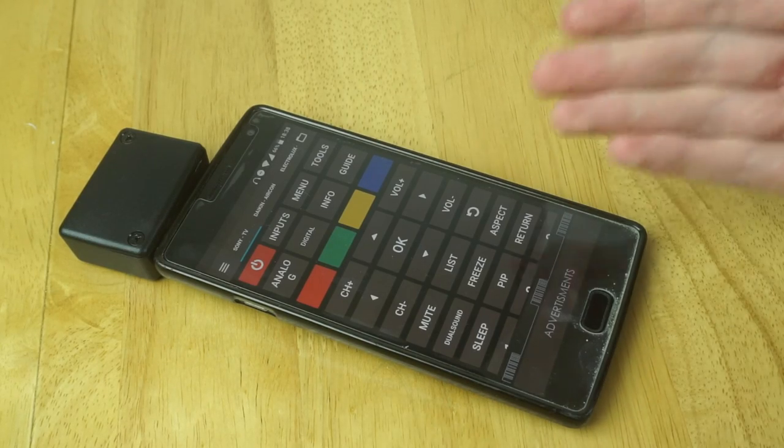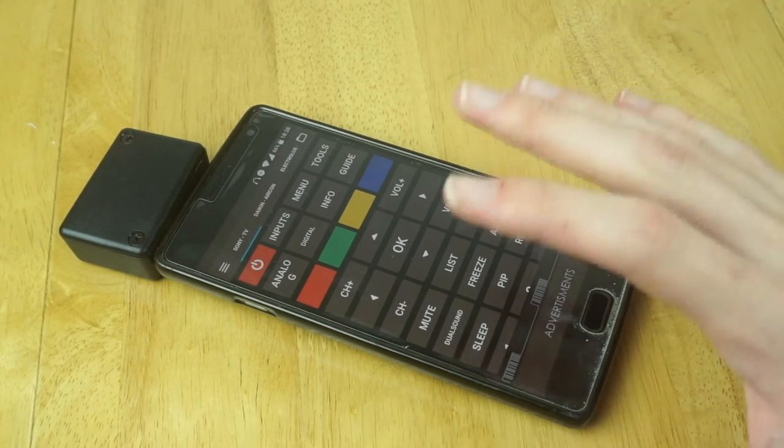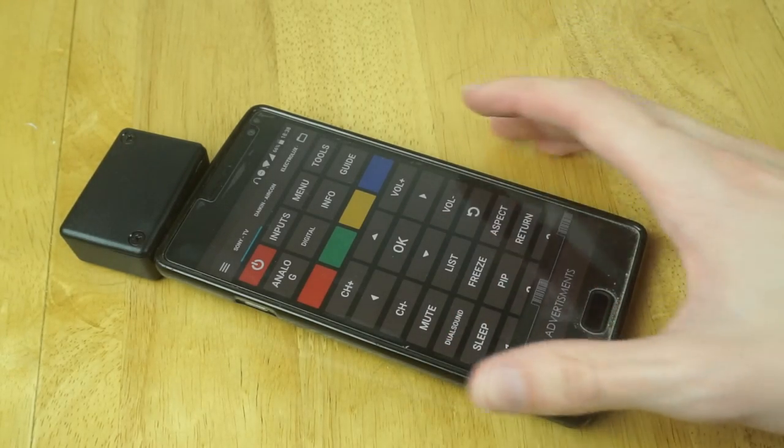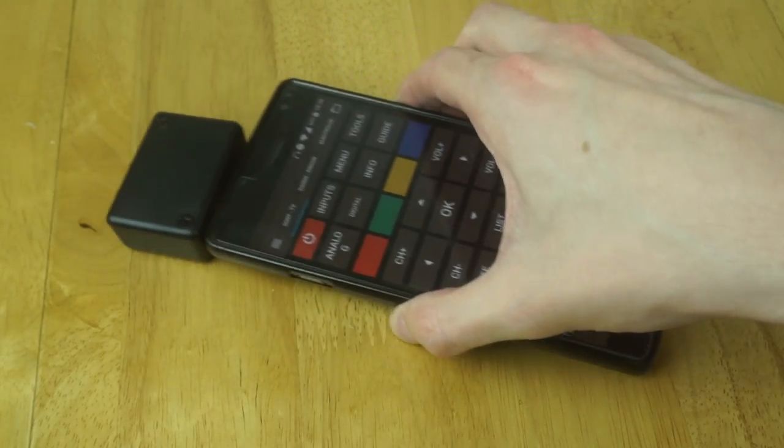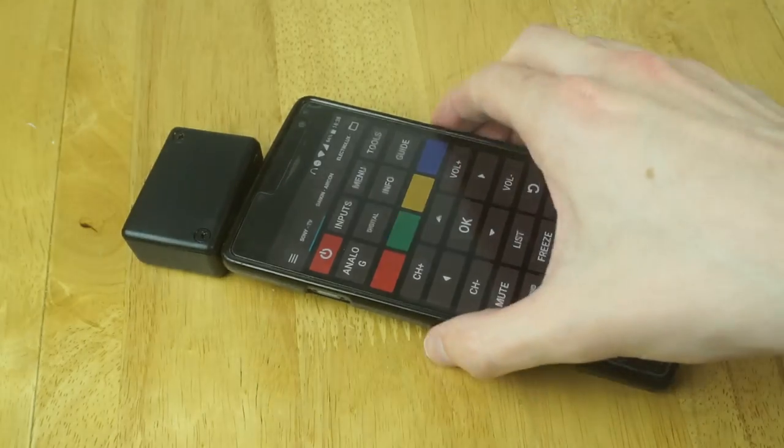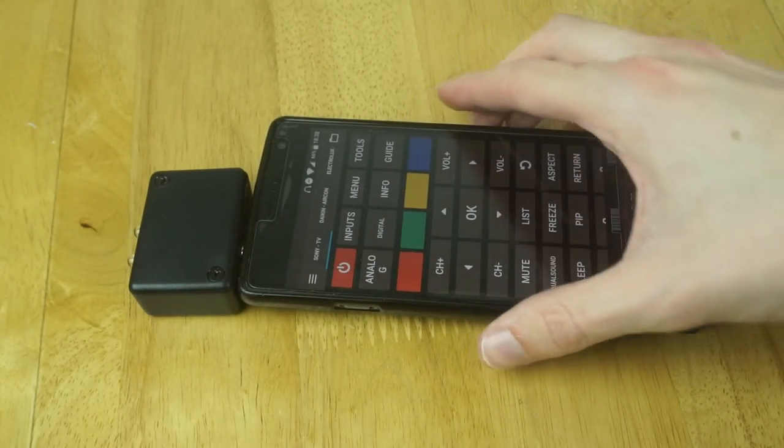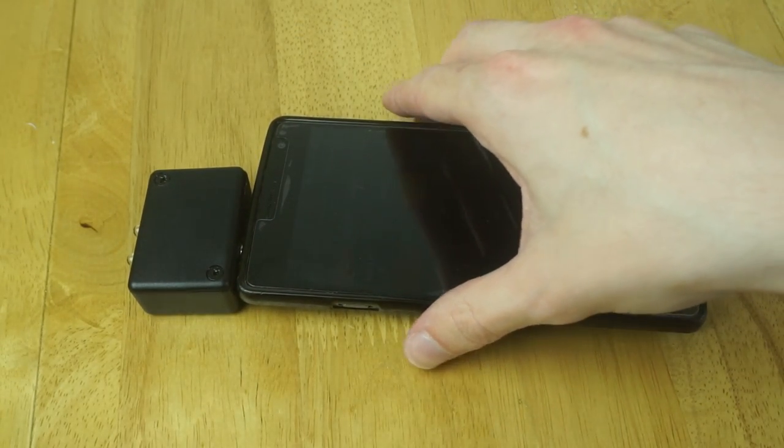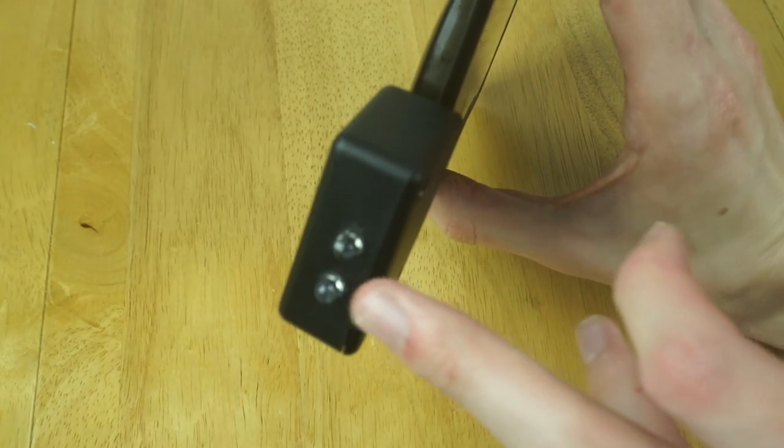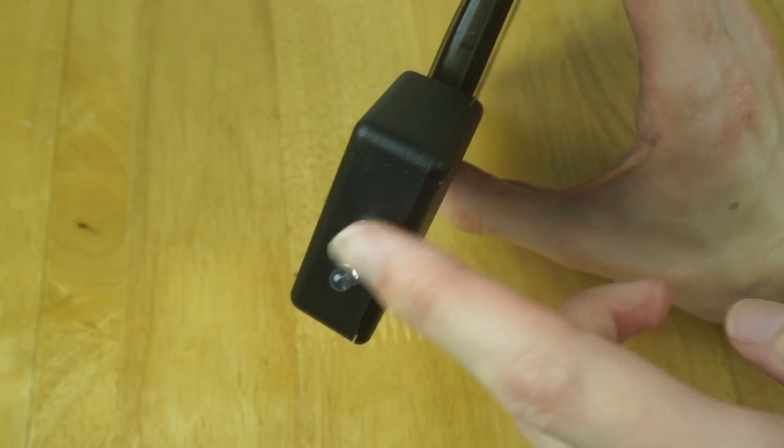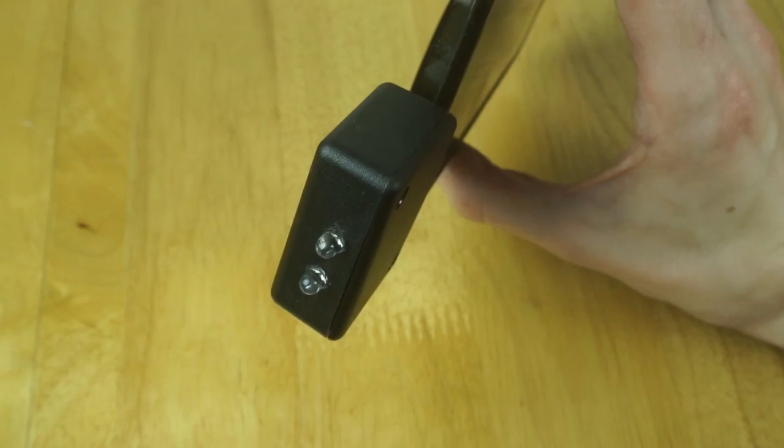So there you have it. It actually works. Now it isn't the sort of thing you would use as a permanent remote control. Because you do have to hold it really close to the sensor. Effectively like right up to it. And you do have to get the angle right. I think part of that is down to my choice of LEDs. I think these LEDs require quite high voltage to work. And they've got quite a narrow beam which causes the issue with angles.